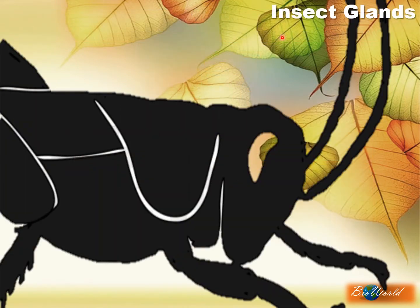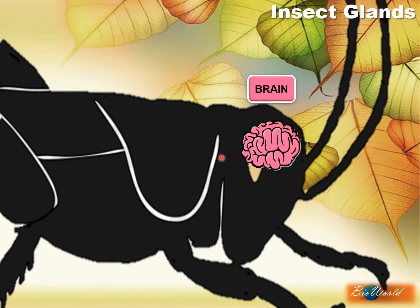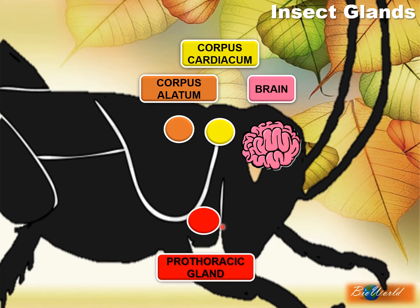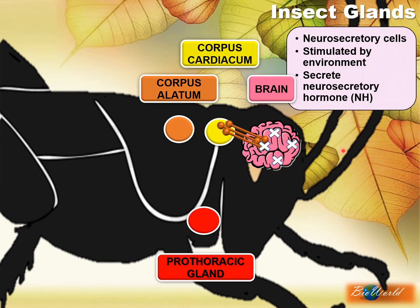I'll start by introducing the glands in the insect that are responsible for hormone secretion. First, there's the brain, and behind the brain we have two structures called the corpus cardiacum and the corpus allatum. Below the mouth we have the prothoracic gland. Inside the brain there is a special group of cells called the neurosecretory cells. These cells are sensitive to the environment, so depending on the suitability of the environment for the growth of the insect, this cell will secrete the neurosecretory hormone, NH.